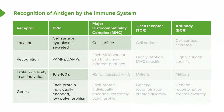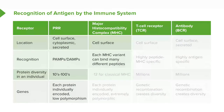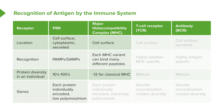Then we have the major histocompatibility complex molecules. These are cell surface molecules, and each different MHC variant can bind many different peptides derived by processing of protein antigens. In each individual, there are around about 12 different MHC molecules with respect to what we call the classical MHC molecules. We each have about 12 of these.